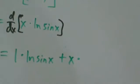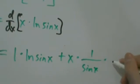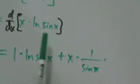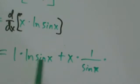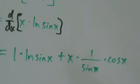The derivative of natural log of a thing is one over that thing times the derivative of that thing. In this case that thing is sine, so we multiply by the derivative of sine, which is cosine of x.